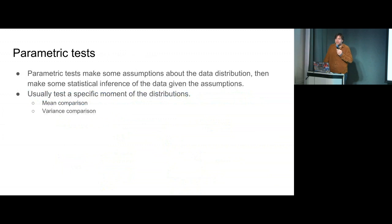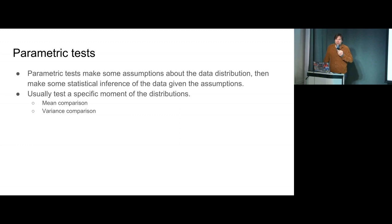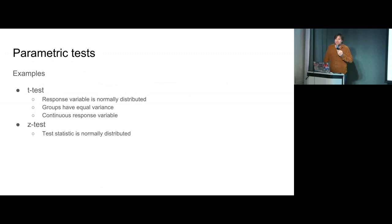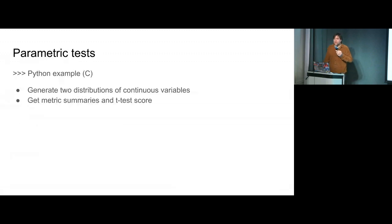Parametric tests make some assumptions about the data distribution and then make statistical inference given those assumptions. Usually they test for a specific moment of the distribution - a mean comparison or variance comparison. Some examples: the t-test assumes your response variable is normally distributed, groups have equal variance, and it's a continuous value. The z-test assumes your test statistic is normally distributed under the central limit theorem. Let's go to an example of what this looks like.